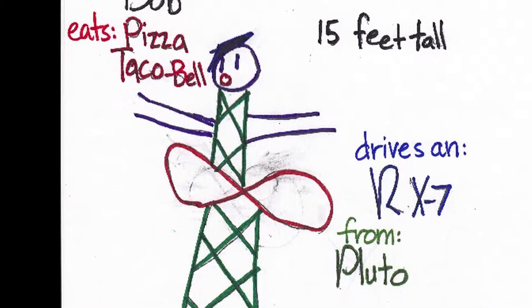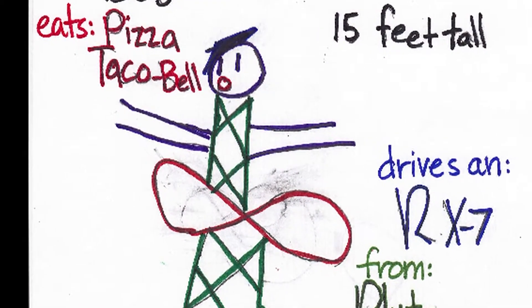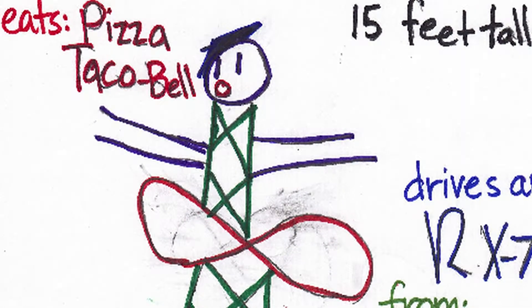This is Bob. He eats pizza and Taco Bell. He's 15 feet tall, drives an RX-7 from Pluto, of course.